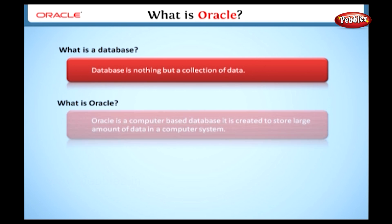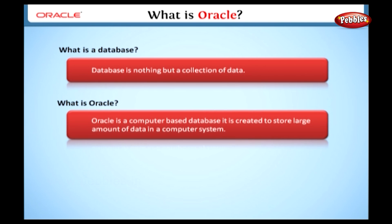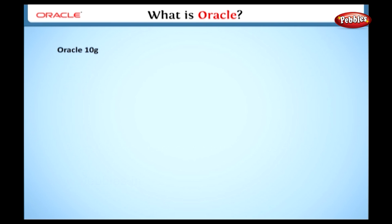Here we will see the answer to our first question. Oracle is a computer-based database created to store a large amount of data in a computer system. In this database, we can store different types of data, like text, number, video, and so forth. I hope you get a general idea about the Oracle database from this definition.